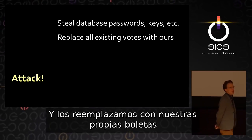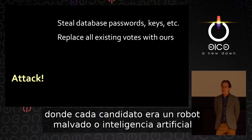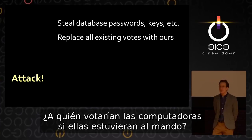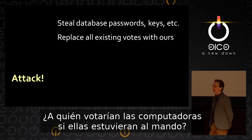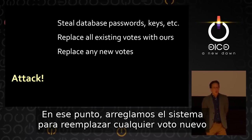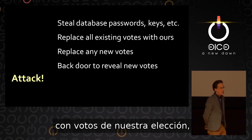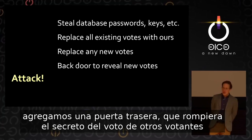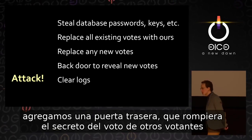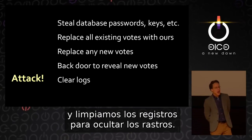We replaced the votes with our own ballot where each candidate was a write-in evil robot or AI from sci-fi movies — who would the computers vote for if they were in charge? We then rigged the system to replace any new votes with votes of our choosing, added a back door to reveal the secret ballots of anyone else who voted, and cleared the logs to hide all the traces.